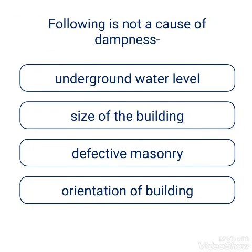Question: Which of the following is not a cause of dampness? Options: underground water level, size of the building, defective masonry, orientation of the building. The answer is size of the building.